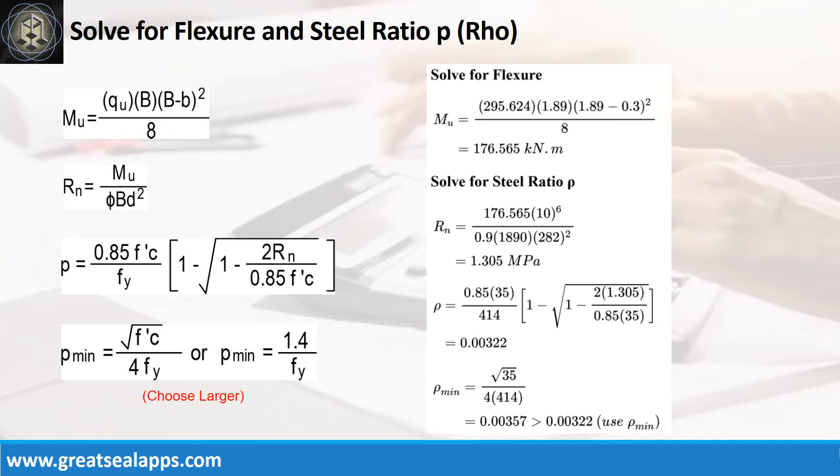Given resistance factor equals 0.9, B equals 1,890 mm, and D equals 282 mm, the beam design ratio Rn equals 1.305 MPa, and reinforcement ratio rho equals 0.00322. Use rho minimum of 0.00357.